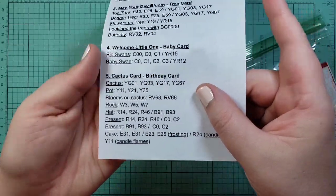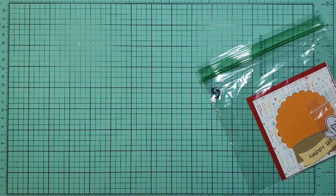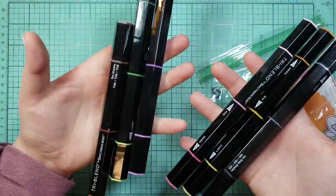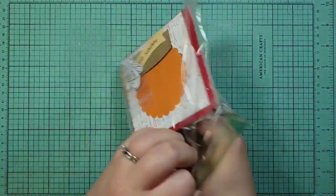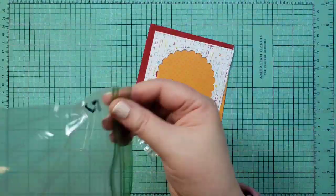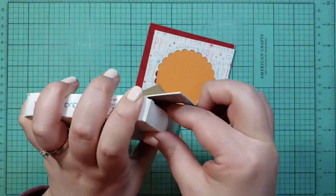I'll link that down below so that you can call them to order a kit if you would like. They did include the list of Copics they used for each card, but I'm going to be using my Spectrum Noir tri-blends so that you can see me use these a little bit more.